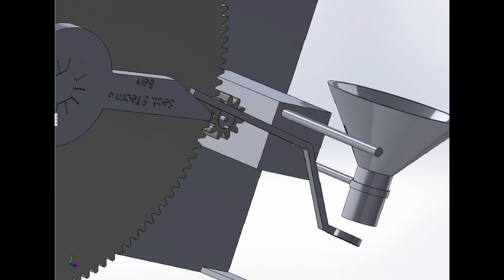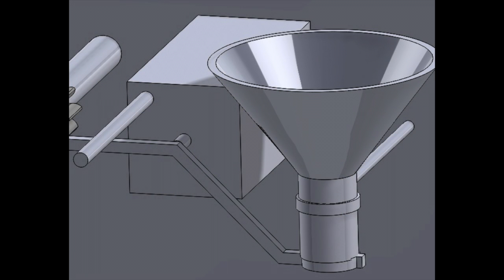As viewed in the animation, the fish feeder is made up of 11 parts: a pinion, a gear, a motor with frame, two axles, a spring connector, a funnel, a funnel holder, the arm, and the arm connection.